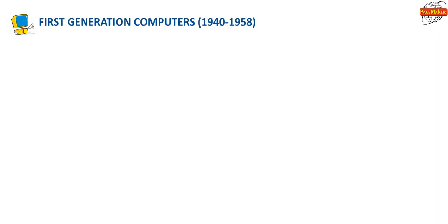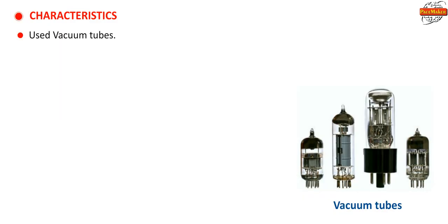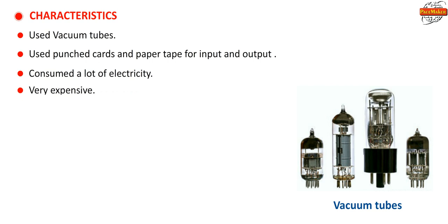First Generation Computers (1940–1958): The first generation of computers started with ENIAC. Key characteristics include: they used vacuum tubes, used punched cards and paper tape for input and output, consumed a lot of electricity, and were very expensive. Examples: Mark I, ENIAC, EDVAC, UNIVAC, etc.